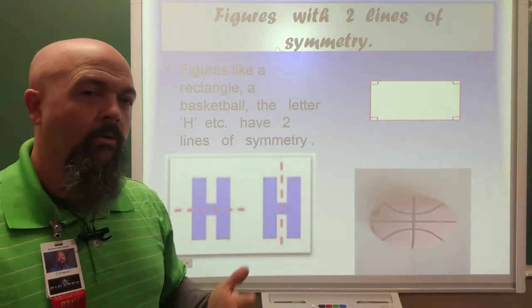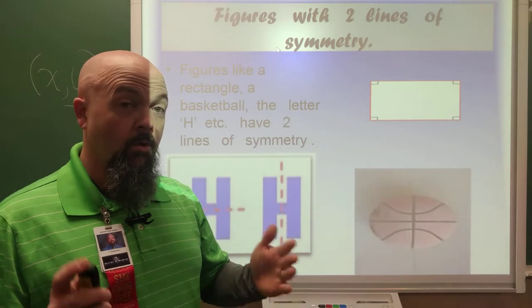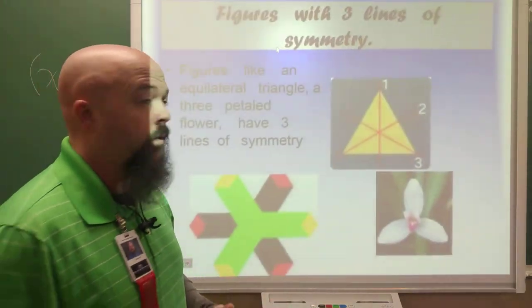Rectangle. As I said, most square rectangle shapes, as long as they are square or rectangle, you will get two lines of symmetry.